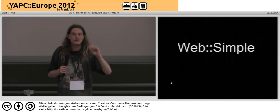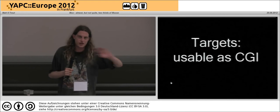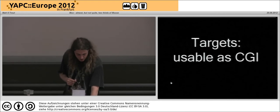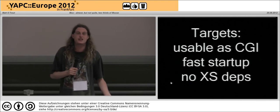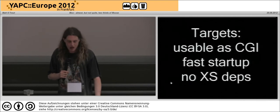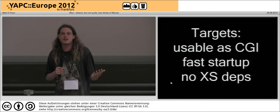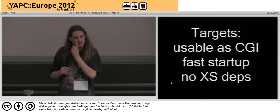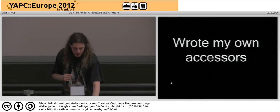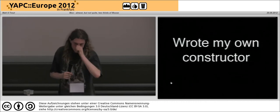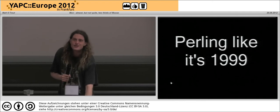It's pretty much just bolting a dispatcher and some basic OO on top of PSGI, which has been fun to experiment with dispatchers in. I wanted this thing to be usable as a CGI script, which meant I needed fast startup and no excess dependencies, because I wanted to be able to just rsync or FTP or deploy around. So I wrote my own accessors, wrote my own constructor.